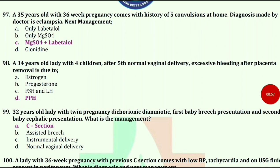A 35-year-old with 36-week pregnancy comes with history of 5 convulsions at home. Diagnosis made by doctor is eclampsia. What's the next management? The answer is magnesium sulfate plus labetalol.